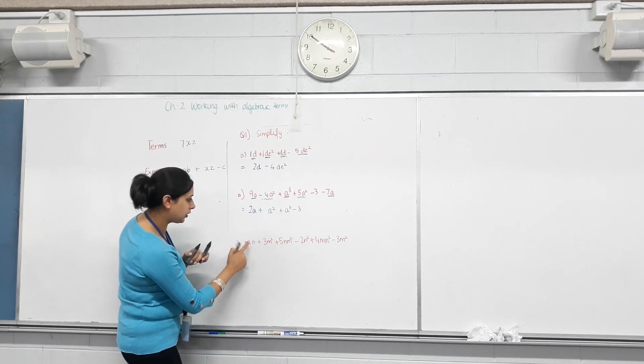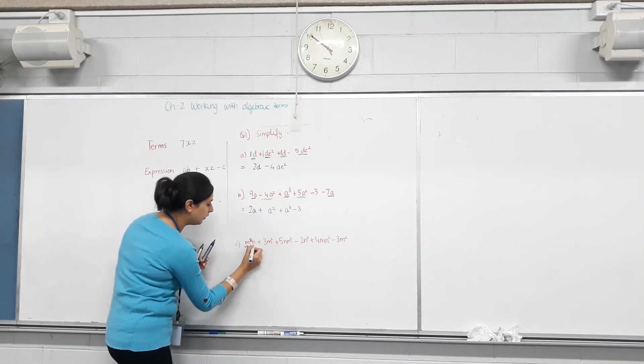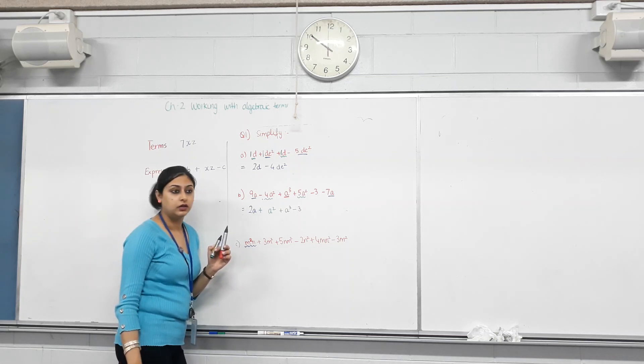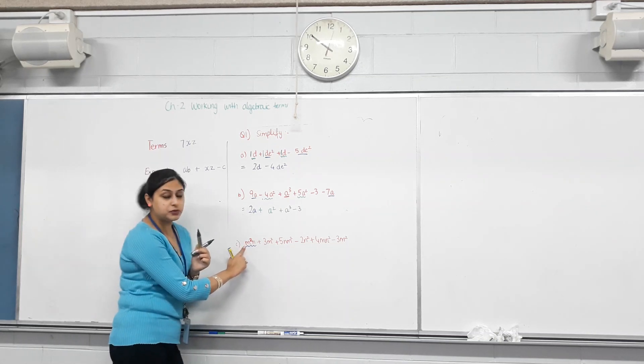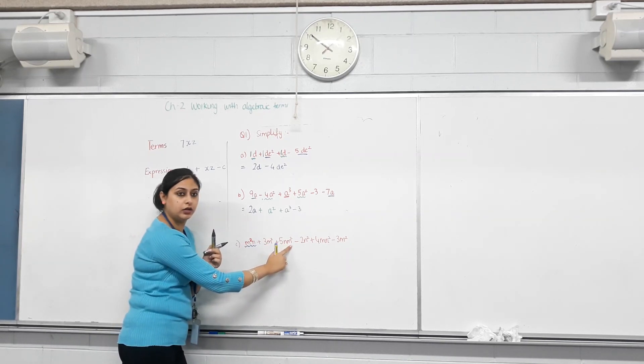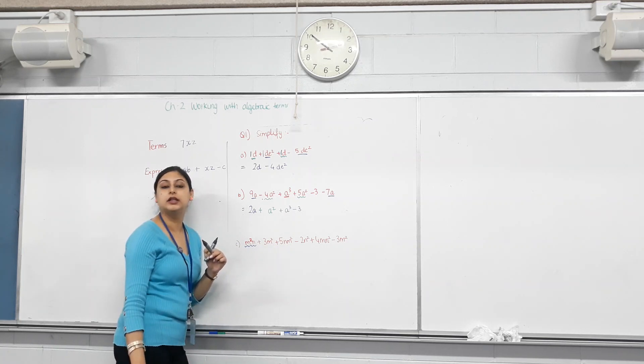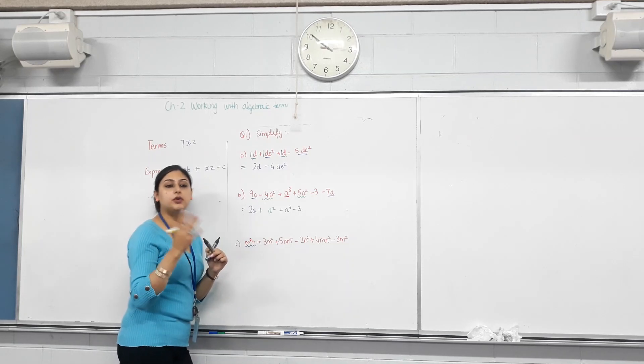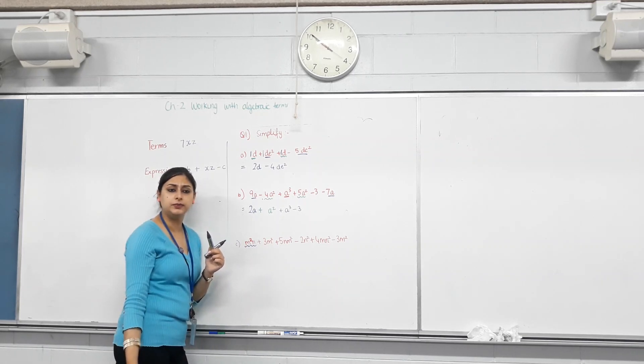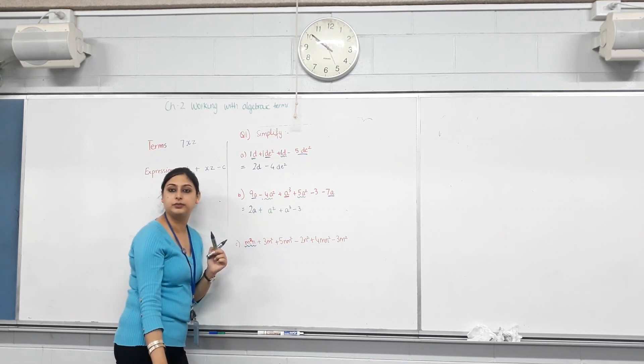M squared N and N M squared. Are these like terms? How many M's do we have here and N's? How many M's do we have here? So they are like terms. Doesn't matter if they've been written the other way around. Like AB is equal to BA. MN is equal to NM. So in multiplication, does order matter? No. So M squared N is the same as NM squared.